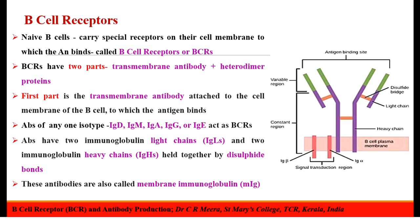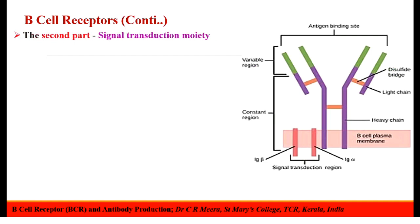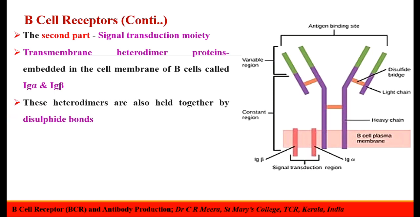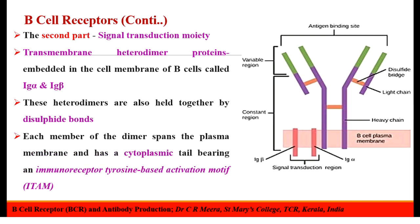These antibodies are oriented outward, that is away from the cell. The second part is the signal transduction moiety. Signal transduction moiety is made up of transmembrane heterodimer proteins embedded in the cell membrane of B-cells and they are called Ig-alpha and Ig-beta. Here in the diagram, we can see the transmembrane heterodimers called Ig-alpha and Ig-beta. These heterodimers are also held together by disulfide bonds. Each member of the heterodimer spans the plasma membrane and has a cytoplasmic tail bearing an immunoreceptor tyrosine-based activation motif, otherwise called ITAM.